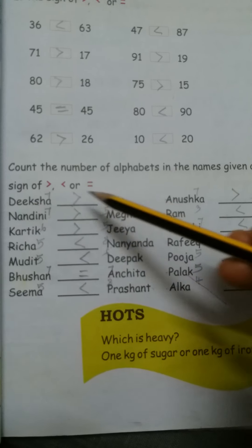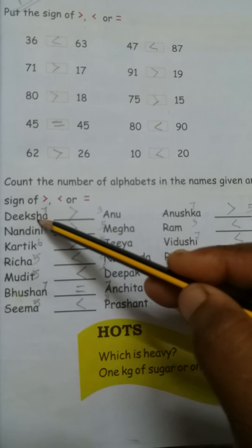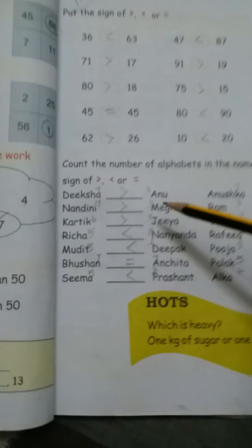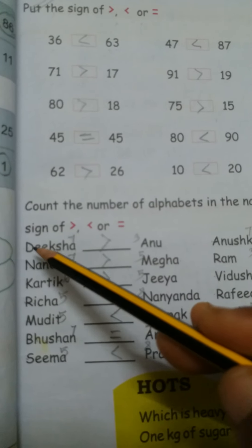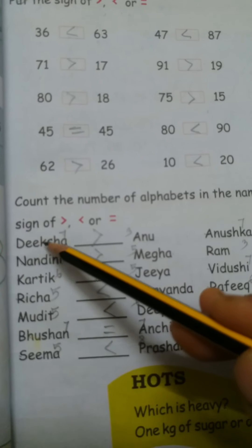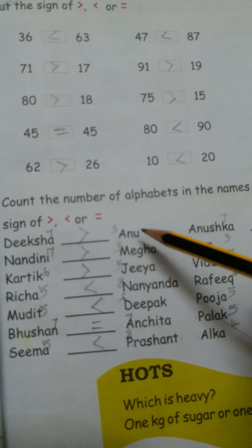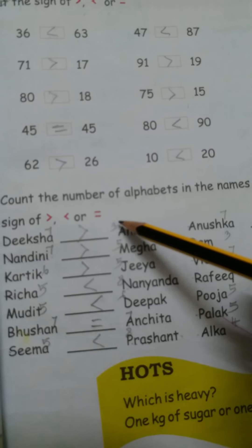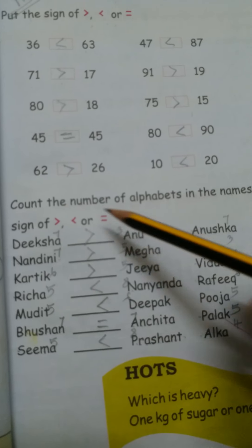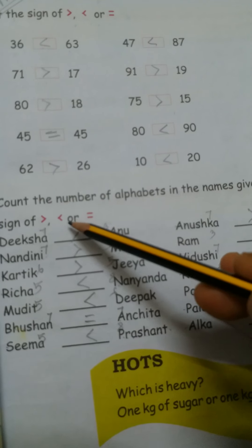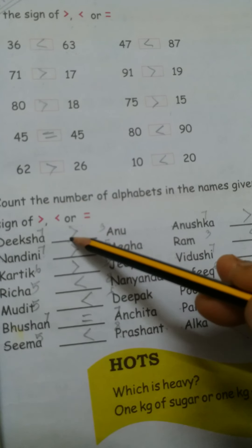First, what is written here, 1, 2, 3, 4, 5, 6, 7, 7 alphabet, right here 7. And 1, 2, 3, 3 alphabet, right here 3. Means this 7 is greater than 3, so that's why we have to draw this sign here.